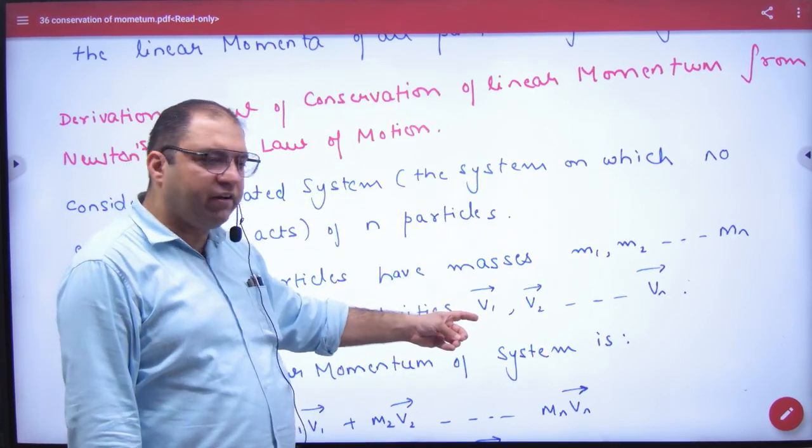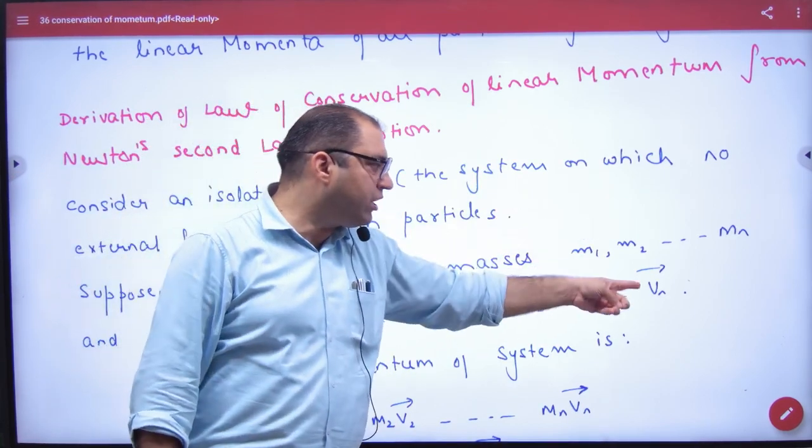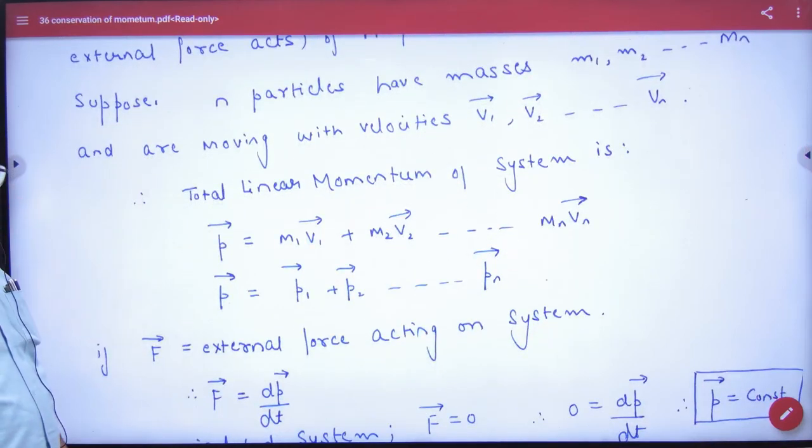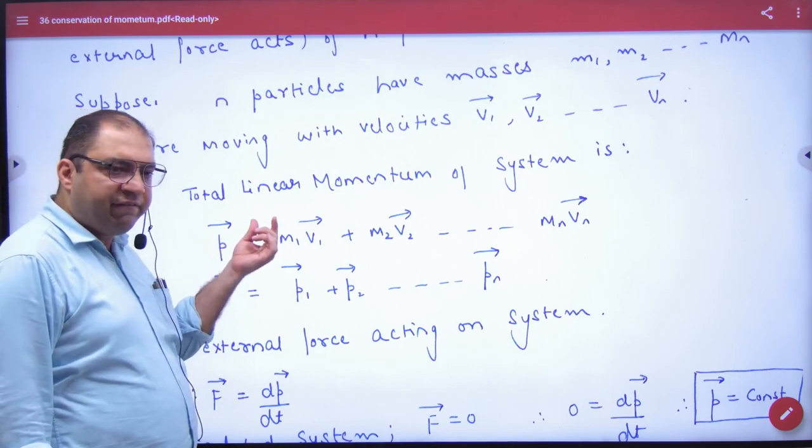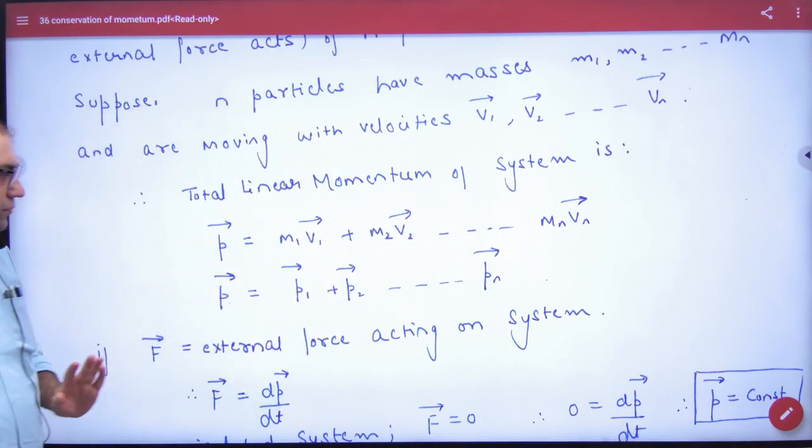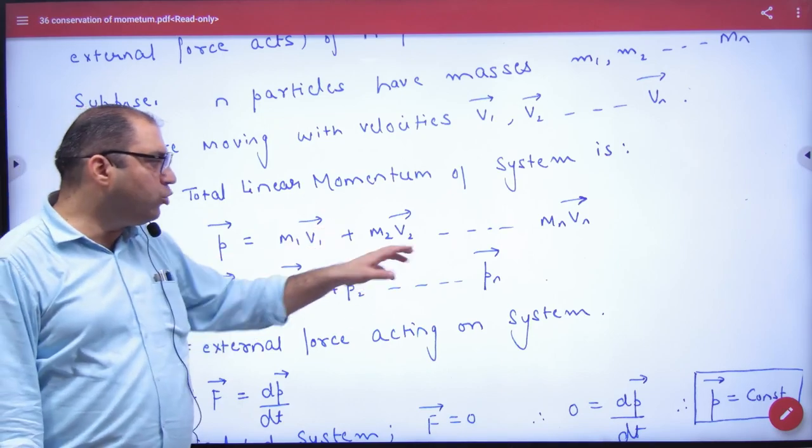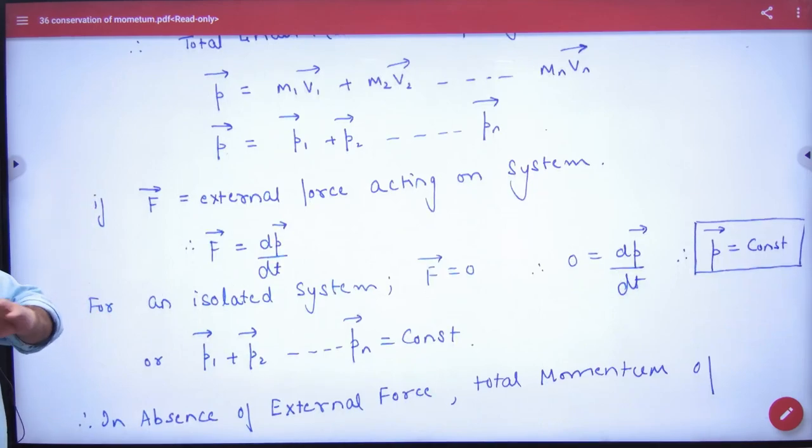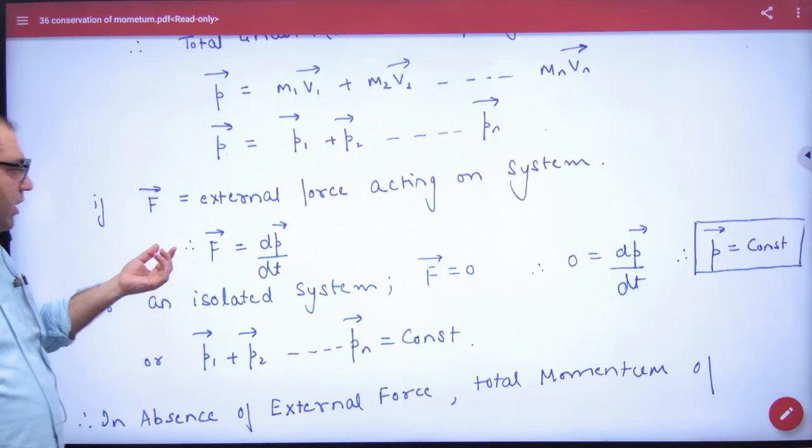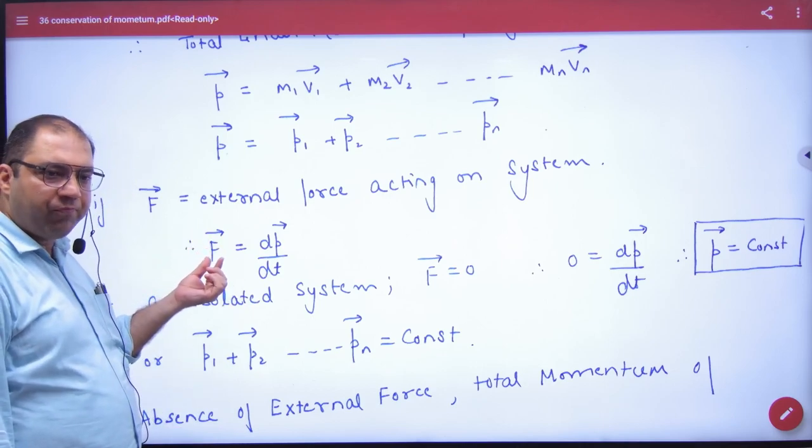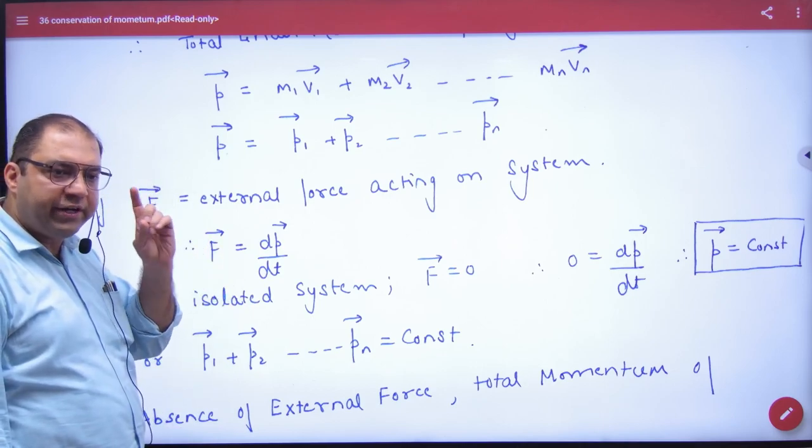The velocity of m1 is v1 vector, m2 is v2 vector, m3 is v3 vector, mn is vn vector. So p1 vector, p2 vector up to pn vector. Now F vector is external force on the system. External force is dp by dt. So external force's value according to law of conservation of linear momentum.